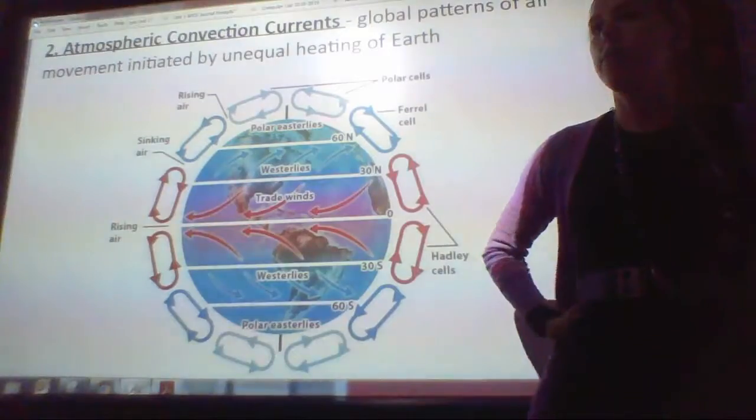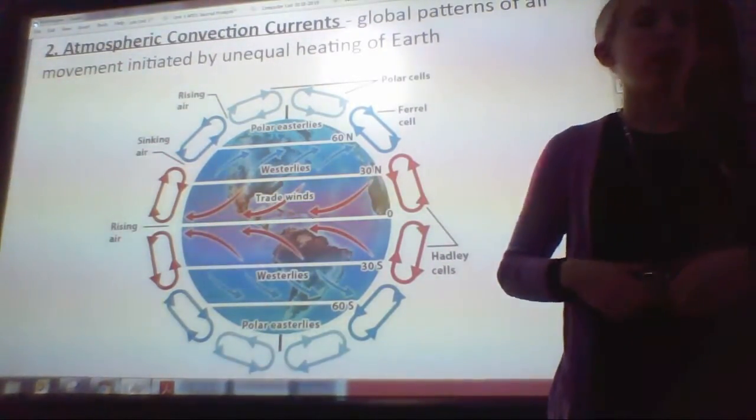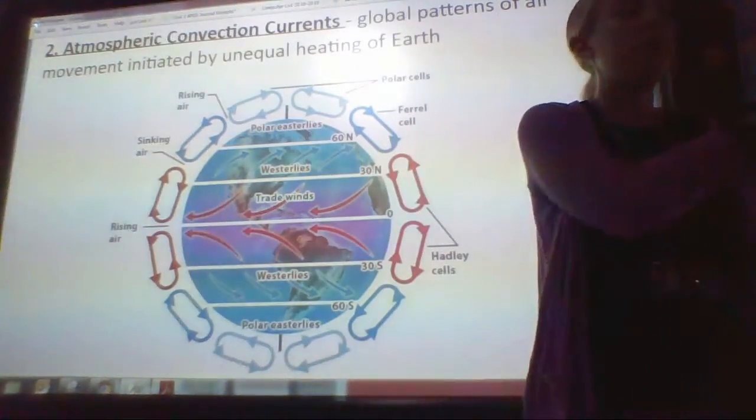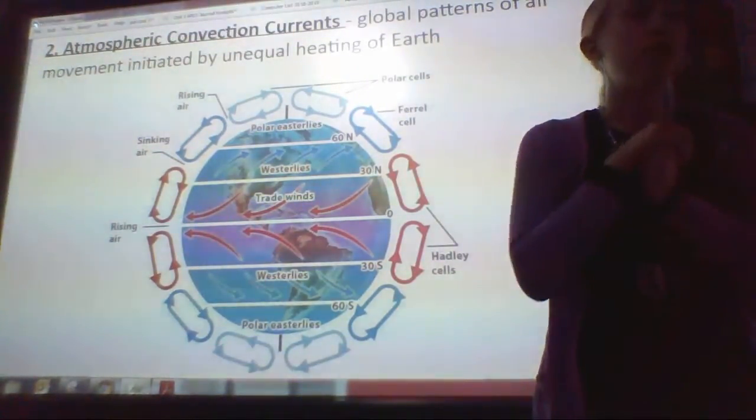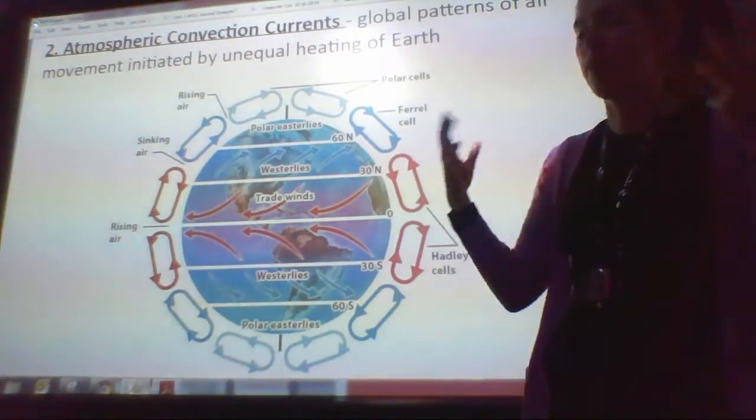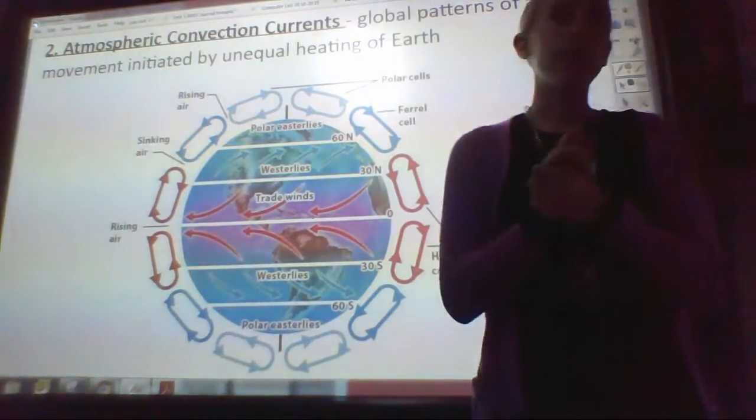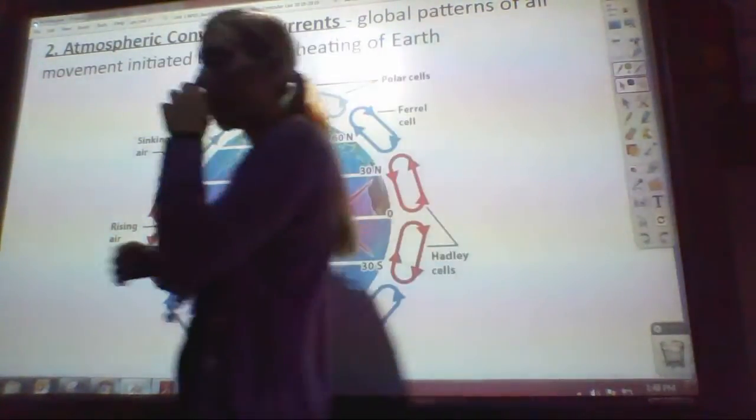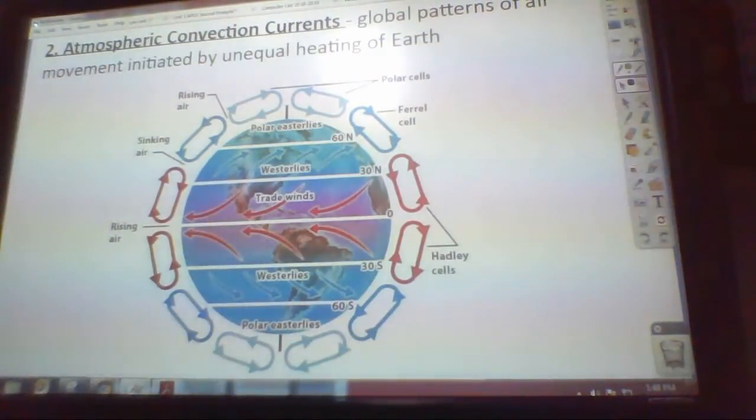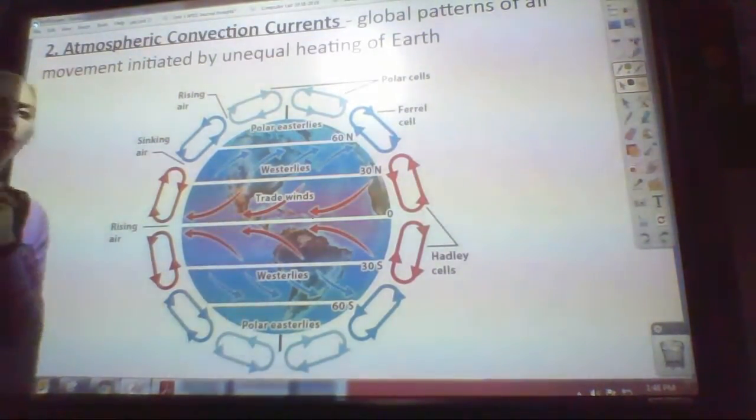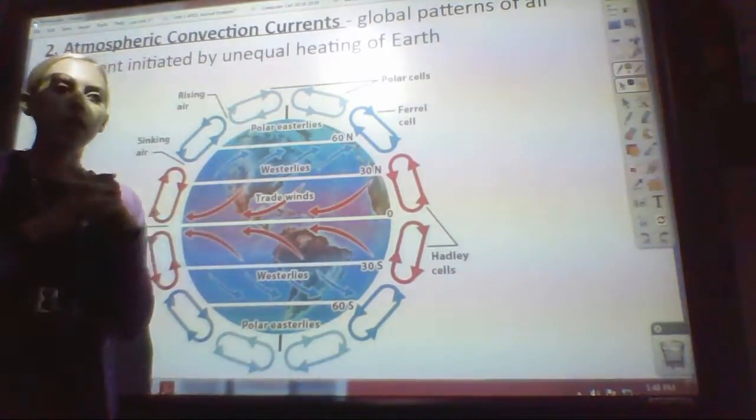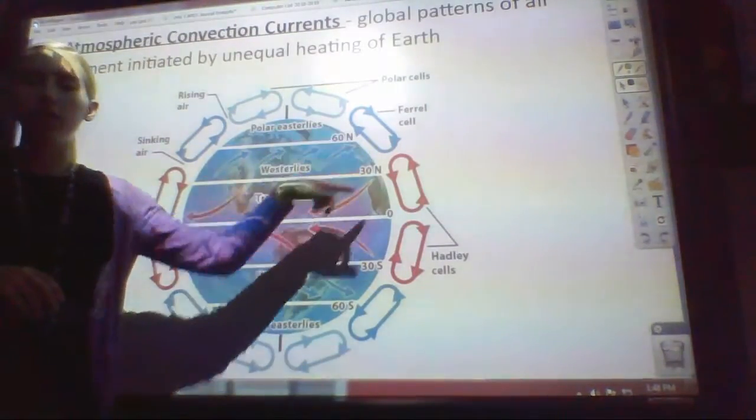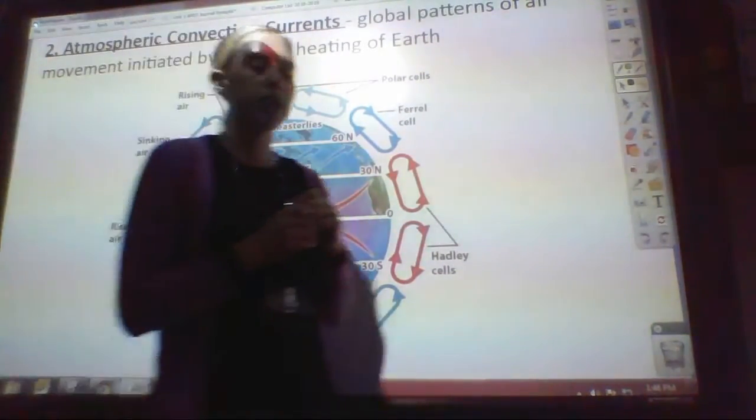So as a result of this air heating and cooling, expanding, rising, we get what's called atmospheric convection currents. Basically big currents of airflow. You may have heard of the jet stream. That's a type of atmospheric convection current. These currents are driven by the fact that the sun heats the earth unequally. You can see that there are lots of different cells that we're going to talk about. These are our convection currents. All of these different types of cells.